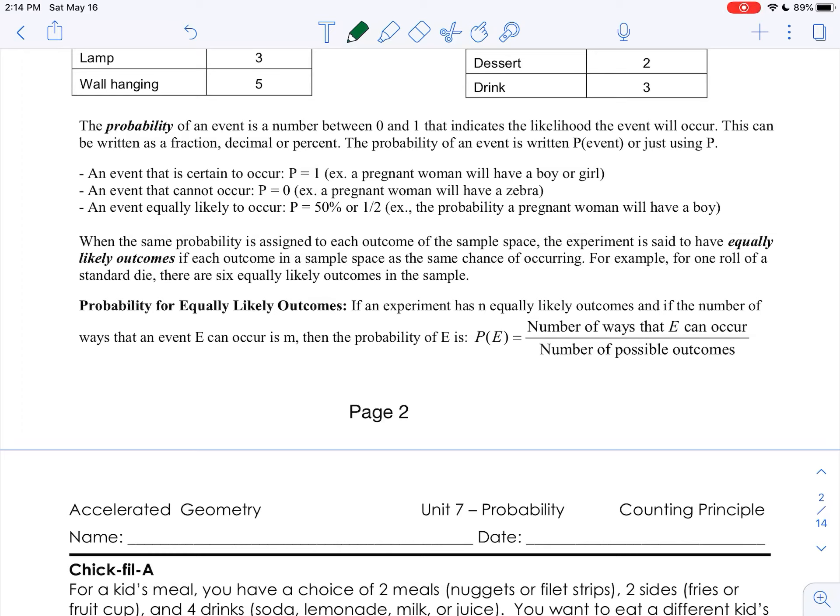So if we're looking at the example of a woman either having a boy or a girl, there's a 100% chance that she's going to have a boy or a girl, so we write that probability as 1 or 100%. If, however, the example was what's the probability that she's going to have a zebra, there's a 0% chance, so we would represent that probability as 0.